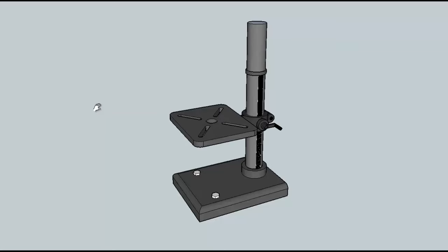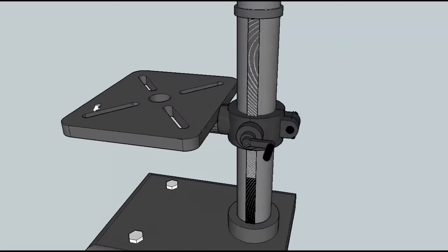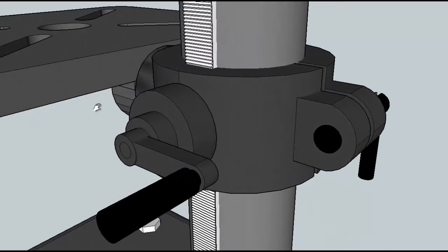The table is able to ride up and down using this system over here. This particular model has a rack and pinion system which allows the user to crank this handle in the clockwise direction to smoothly raise the table. In the counterclockwise direction it would lower the table.